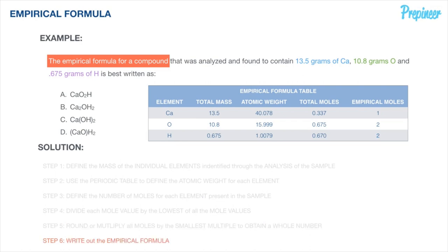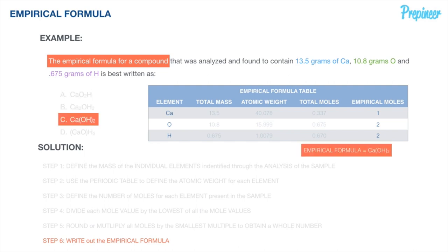Step 6: write out the empirical formula. Focusing on our empirical moles column — calcium: 1, oxygen: 2, hydrogen: 2 — we can write the empirical formula as CaO₂H₂, which can also be written as Ca(OH)₂. The correct answer is Ca(OH)₂.